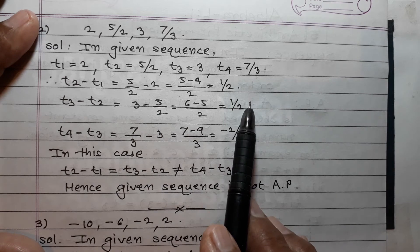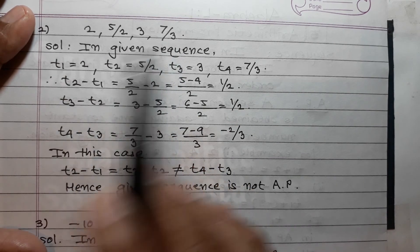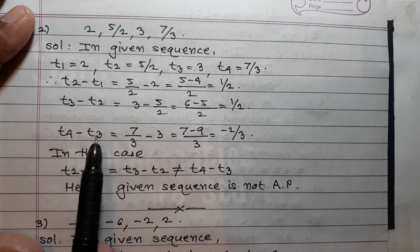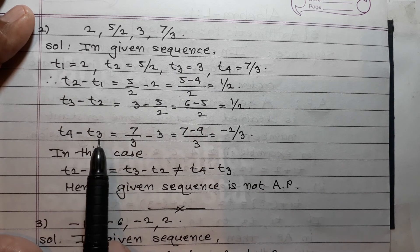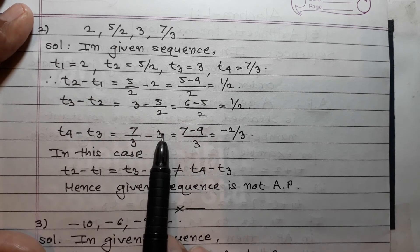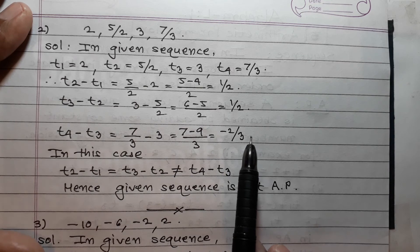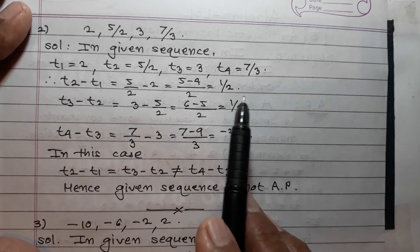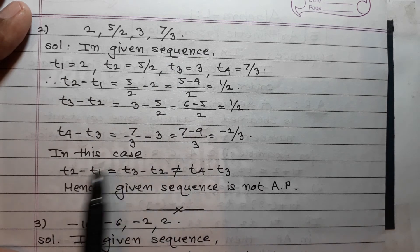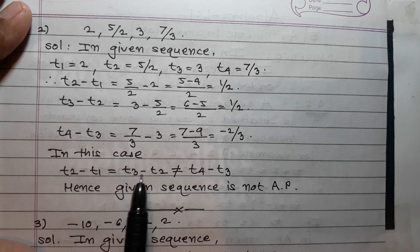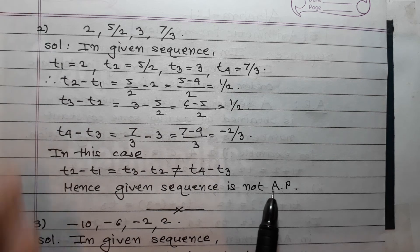The first two differences are equal, but to confirm I must also check t4 - t3 = 7/3 - 3 = (7-9)/3 = -2/3. Since t2 - t1 = t3 - t2 but this is not equal to t4 - t3, the given sequence is not an AP.